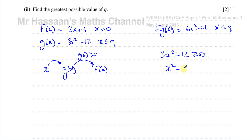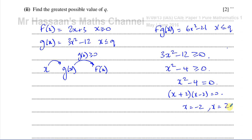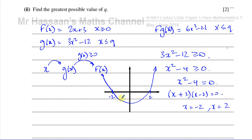Dividing both sides by 3 gives x² − 4 ≥ 0. Finding critical values when x² − 4 = 0: factoring gives (x + 2)(x − 2) = 0, so x = −2 and x = 2. Sketching this quadratic — a smiley-face parabola through −2 and +2 — we can see it's greater than or equal to 0 when x ≤ −2 or x ≥ 2.